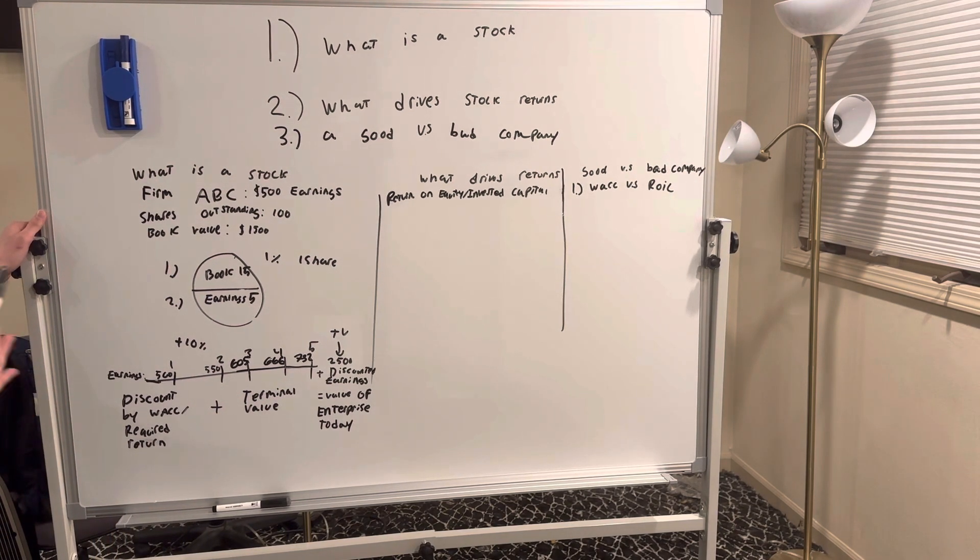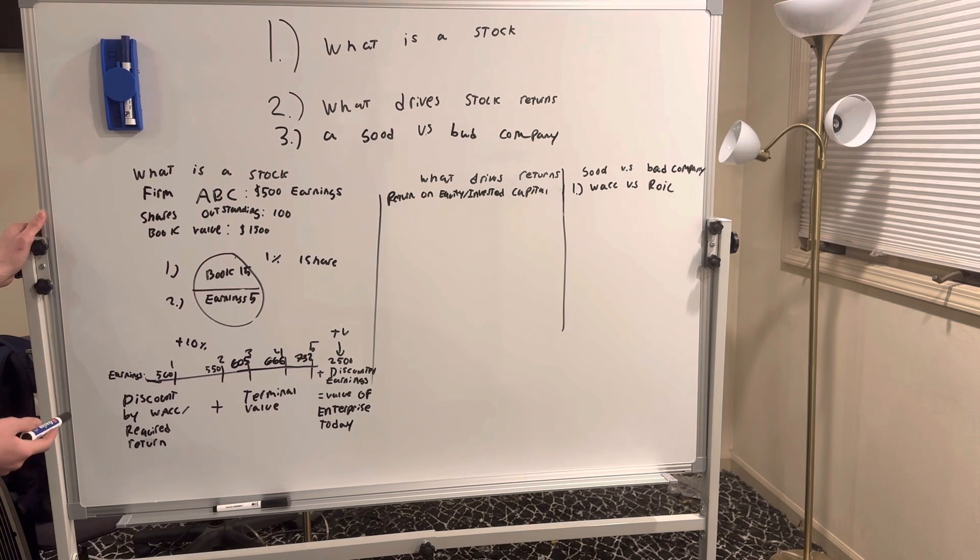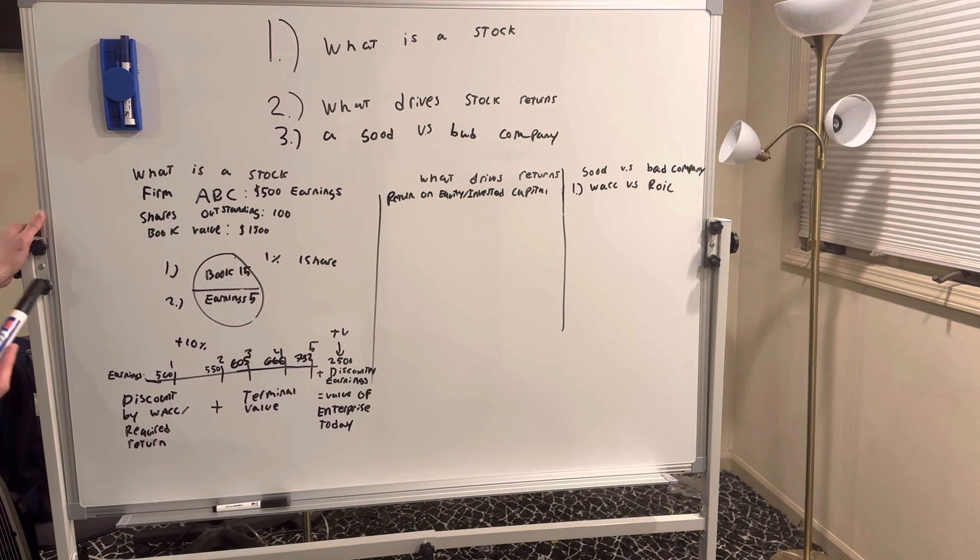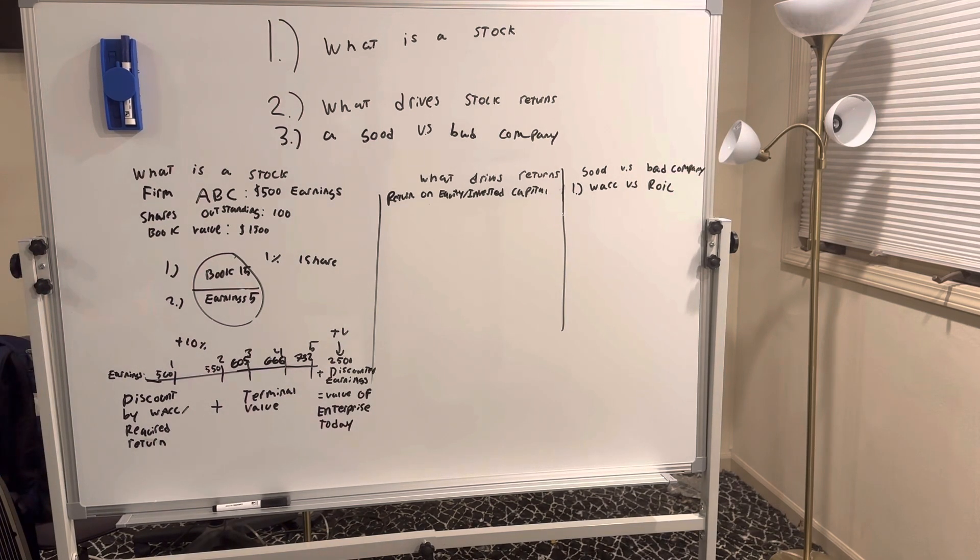And we have to discount those earnings by our required return or the firm's weighted average cost of capital. The reason we have to do that is because we're not going to lend the money for free. We have to earn something.